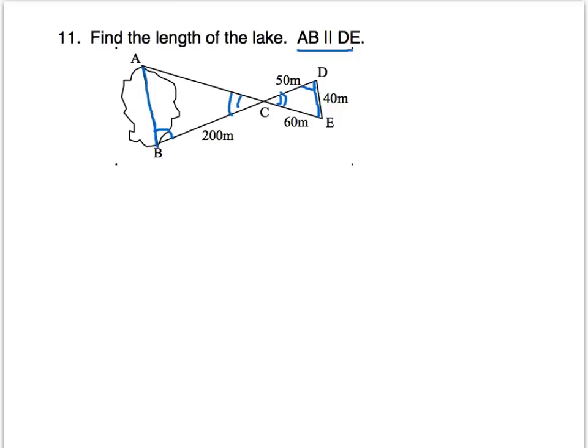In particular, let's name the triangles. Triangle ABC would be similar to triangle EDC. And that information will help us set up proportions to find the length of the lake.